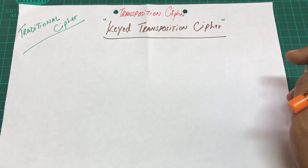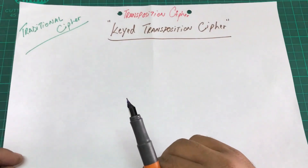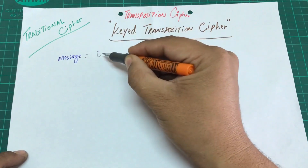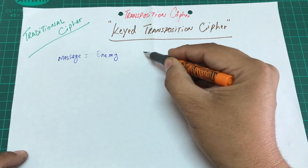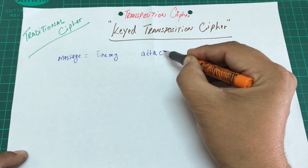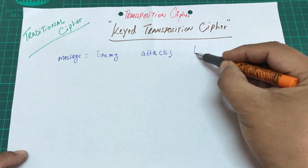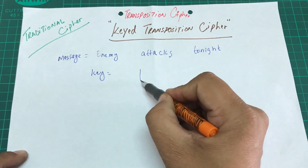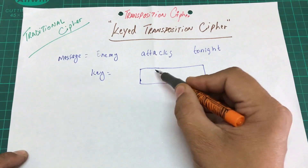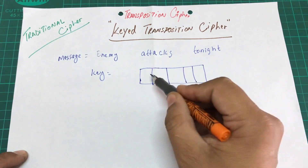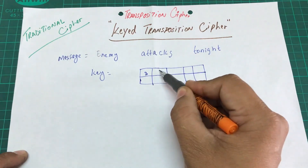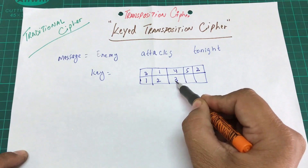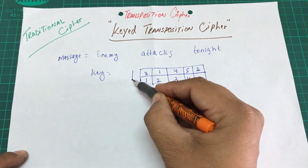Let's look at keyed transposition cipher. Let's say I have a message I want to encrypt: 'enemy attacks tonight.' The key is agreed upon between sender and receiver. Our key looks like this: 3, 1, 4, 5, 2 — that is, positions one through five for encryption.